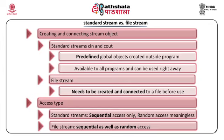Once the instance is created, it needs to be connected to the physical file already residing on some secondary storage device. At the end, the file also needs to be closed. These three tasks — creating the instance, associating with the physical file, and closing or destroying the object — are not required with standard streams. Another difference is the access type: with standard streams we use sequential access, and random access is meaningless for them. Whereas with files, both sequential and random access are meaningful.